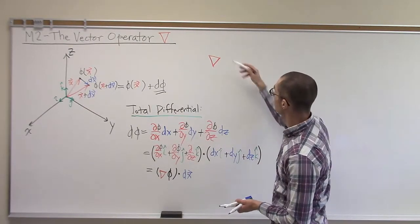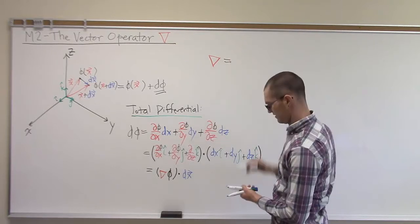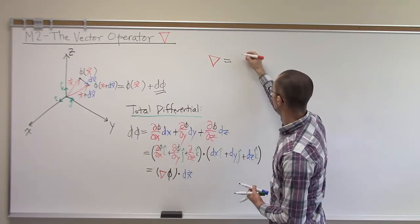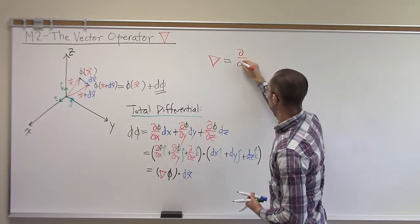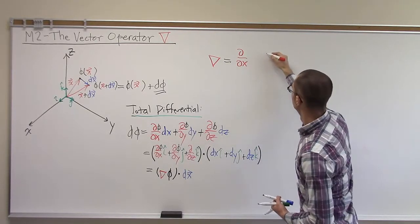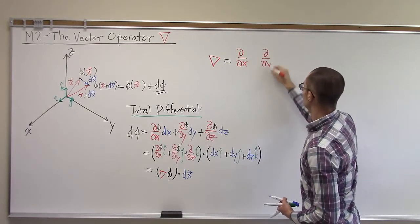So we define this operator here as the vector d by dx, d by dy, d by dz in the Cartesian coordinate system.